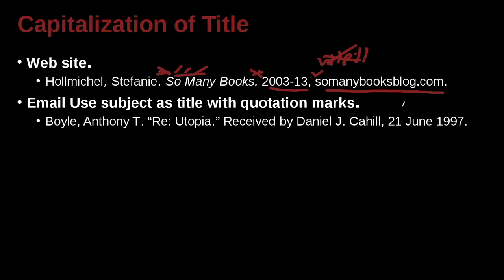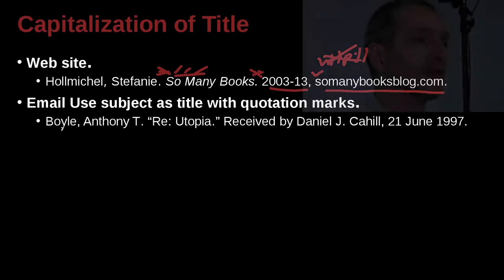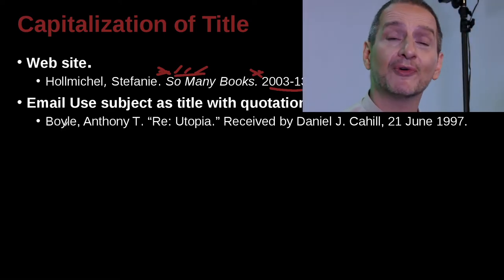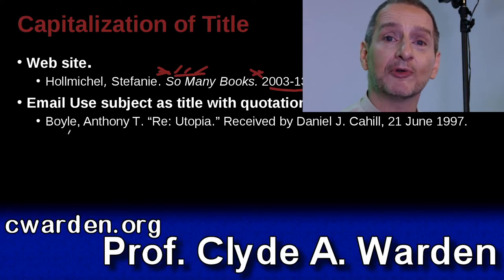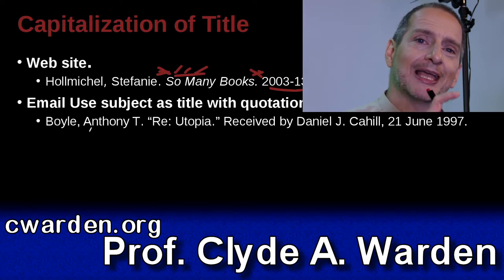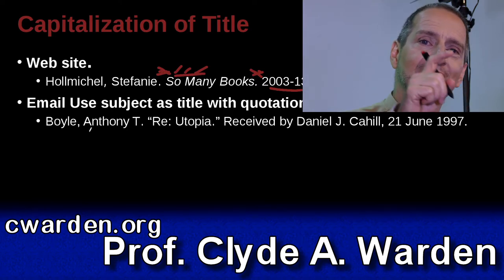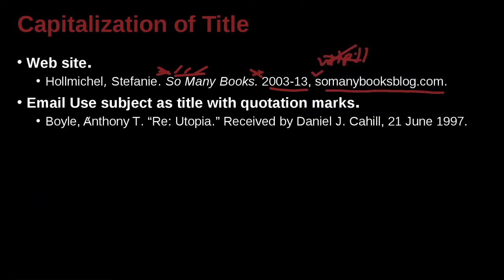What if somebody sends you an email and you want to use that in your research? Well, you can do that also. We begin with the very basic one — the author. Who sent you the email? Who's the author? And in this case, very simple: use the name, and remember, last name first, first name last. So in this case, Boyle — last name — Anthony, and middle name is T, and then we have a period.